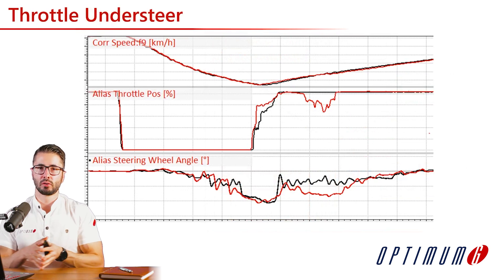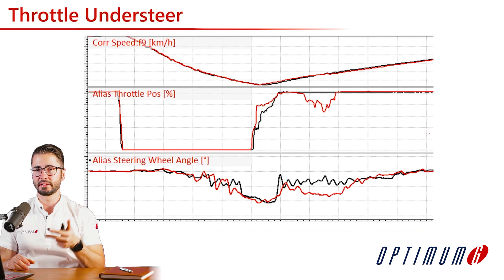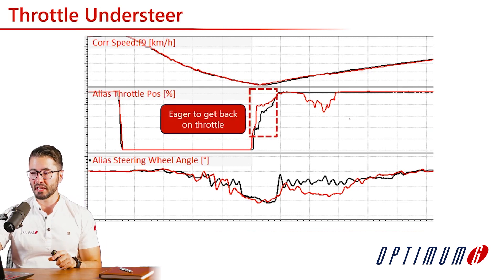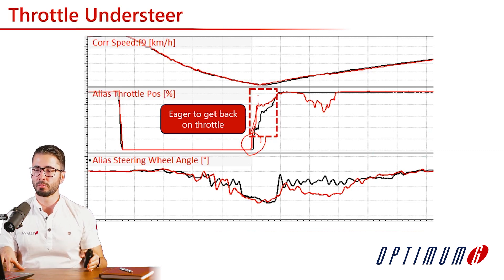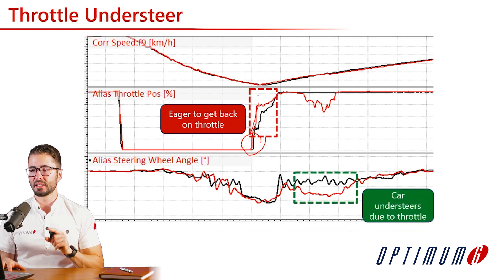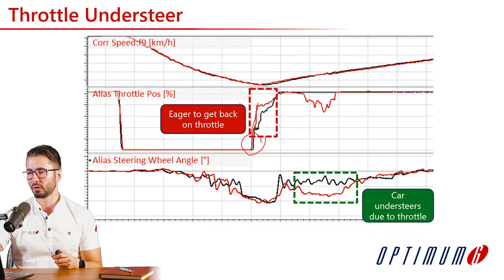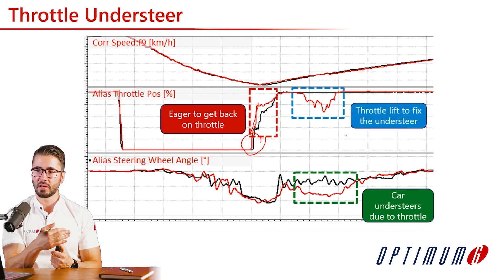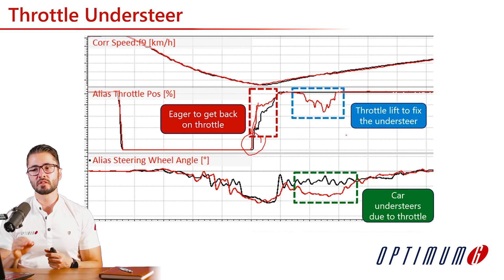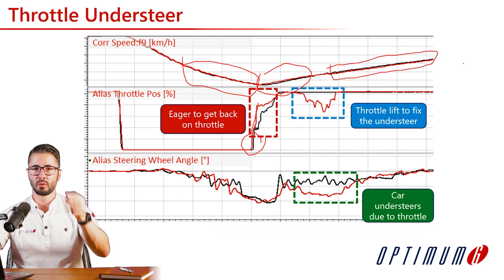In the next example, we see throttle understeer — the driver applying the throttle and getting understeer because of it. We have corrected speed, throttle position, and steering all together. The comparison driver in red applies throttle at the same pickup point but is much more aggressive. This shifts weight to the rear, causing understeer — seen in the high amount of steering required following the throttle application. He needs to lift the throttle to get back to his driving line before he can go full throttle again, losing speed all the way to the next braking zone.